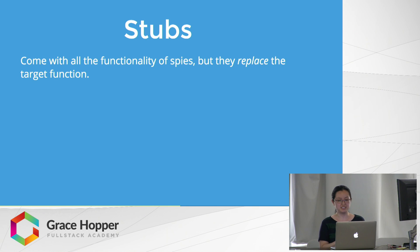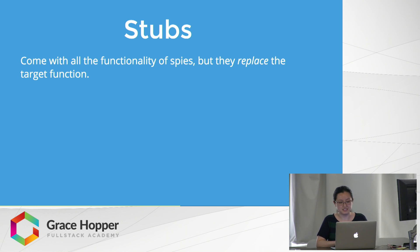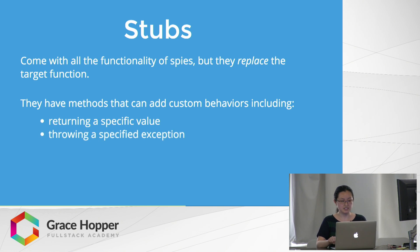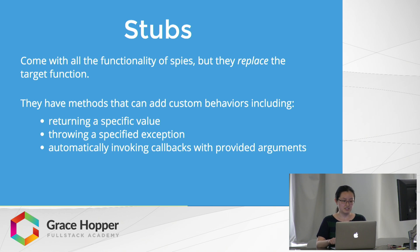The second type of test double is stubs. Stubs are really powerful — they come with all the functionality of spies, but they replace the target function instead of just spying on it. When you spy on a function, the function's behavior doesn't change; if you want to change the behavior, you use a stub. Stubs have methods that let you add custom behavior, like forcing the stub to return a specific value, throw an exception, or invoke callbacks with arguments you provide.